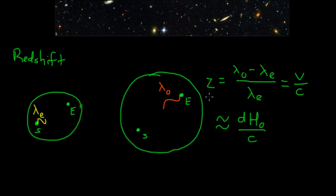So if I can measure the redshift of a distant galaxy, and I can determine what the Hubble parameter is, I can use this equation to solve for the distance to that galaxy.